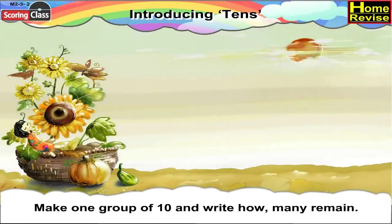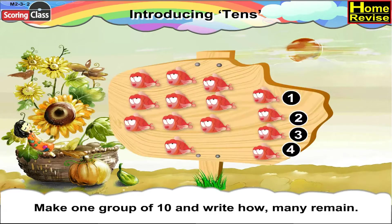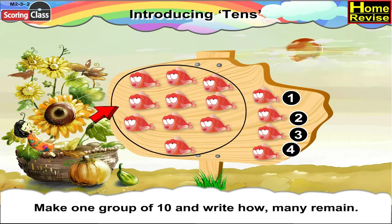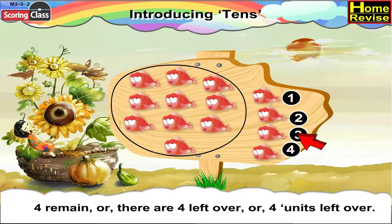Make one group of ten and write how many remain. Let us see the fish. If we circle out ten fish, then four fish remain — or four fish are left over.